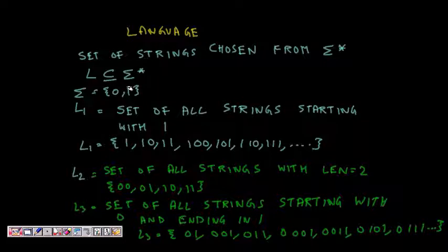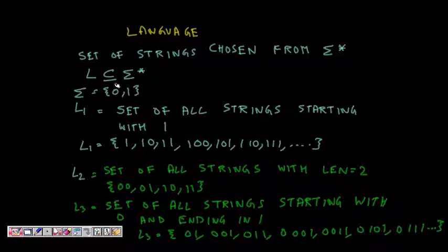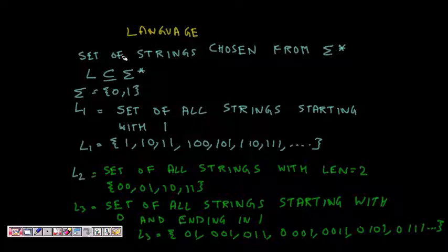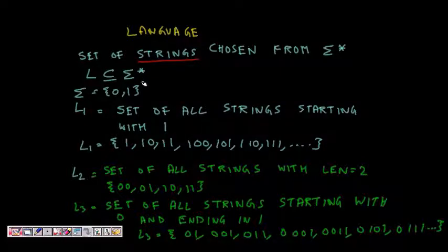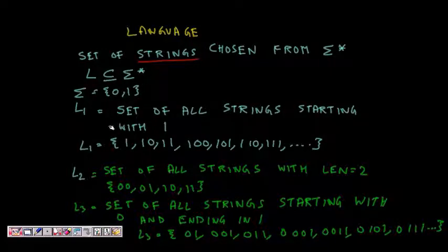Now let's consider language. Just as in English we went from alphabets to words, now we move to language. In automata theory and theory of computation, a language is a set of strings chosen from sigma star — it is a subset of sigma star.